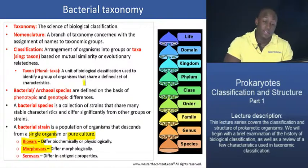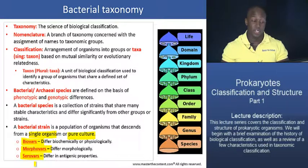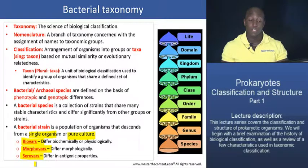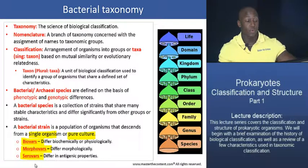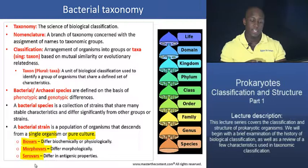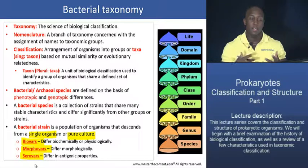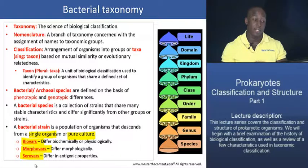The last strain type to discuss is the serovar — a strain that differs from others in terms of its antigenic properties. These are a few important terms related to bacterial strains. In a nutshell, this slide gives you a quick snapshot of key taxonomic concepts and terms you need to understand for what we'll be discussing in the coming slides.